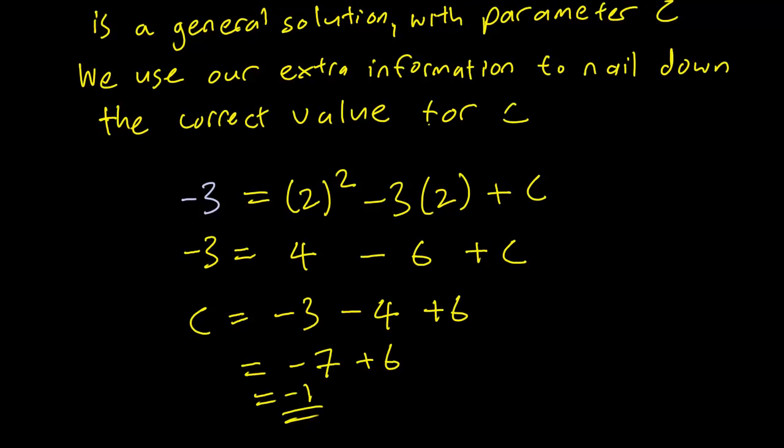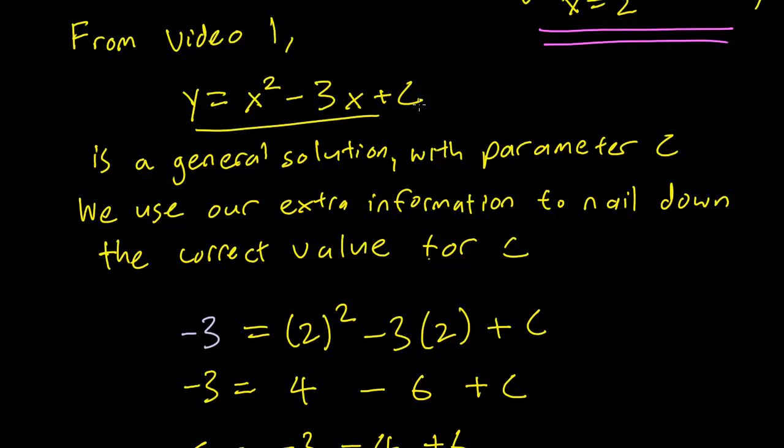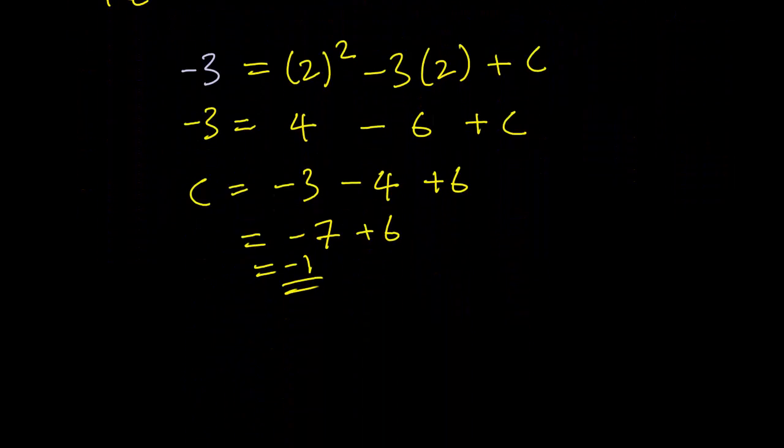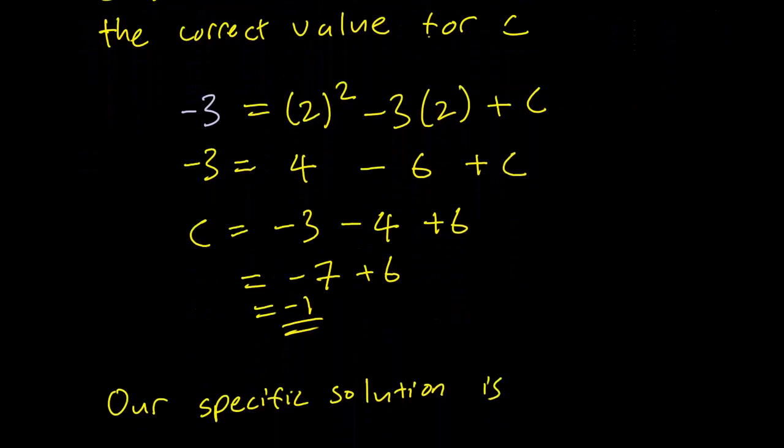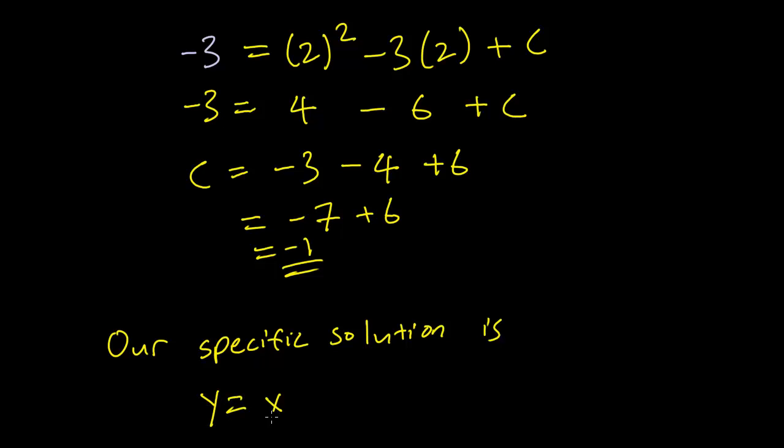This means that going back at our equation, our specific solution is y equals x squared minus 3x plus c. Except that we replace c with minus 1, and that is the answer to our initial value problem.